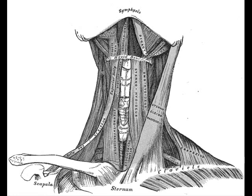Hi, I'm Dr. Dave. The mylohyoid muscle is a muscle running from the mandible to the hyoid bone, forming the floor of the oral cavity. These muscles are mesodermal in origin.